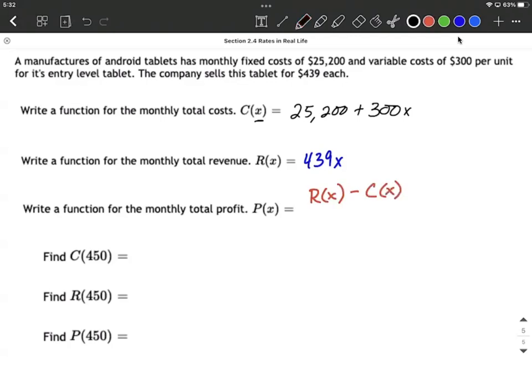Okay, so in our case, our revenue function was given by $439X. And then from that we have to subtract away our cost function. So our cost function was $25,200 plus $300X. Now you may notice that I used a big set of parentheses.